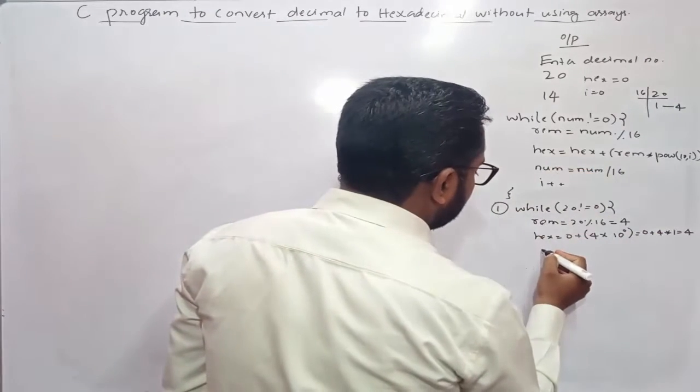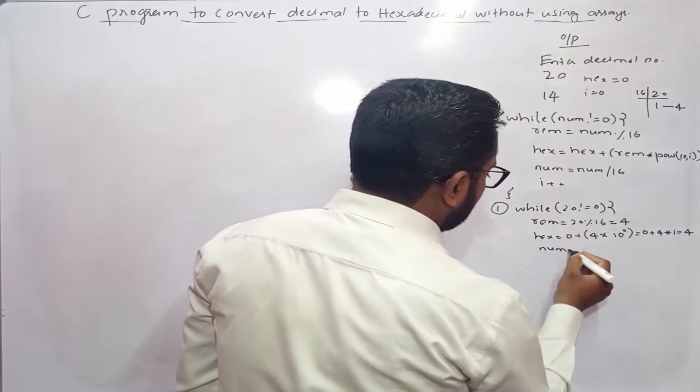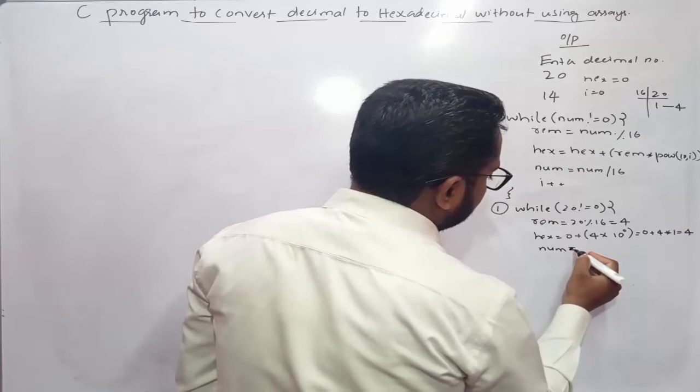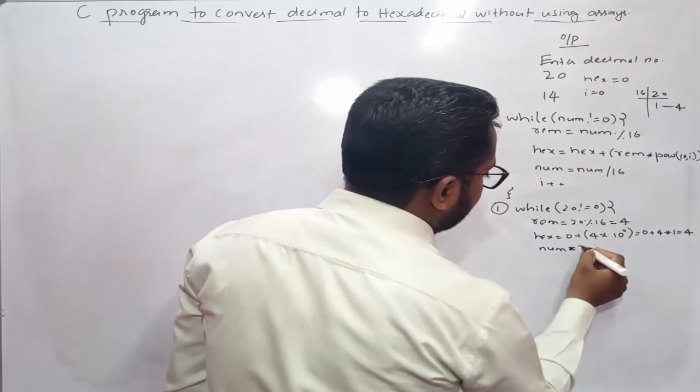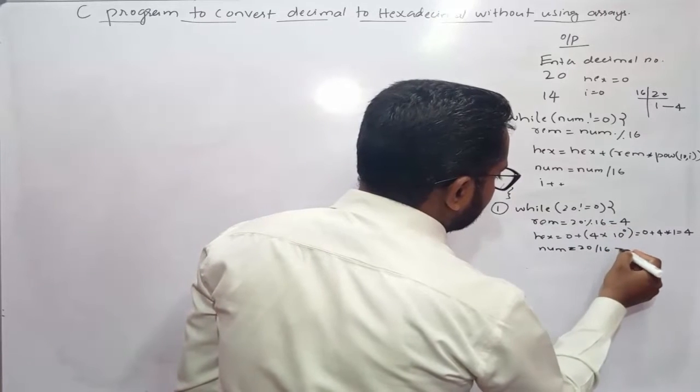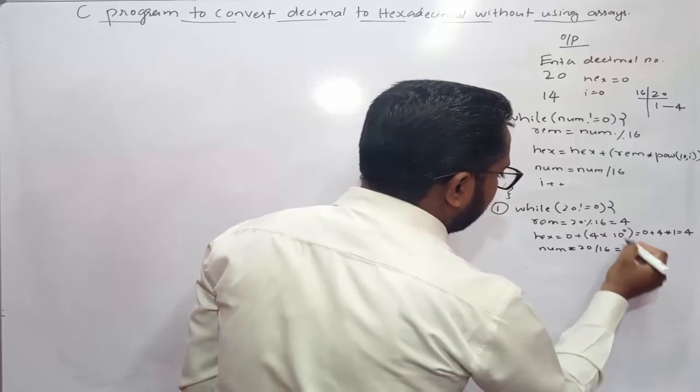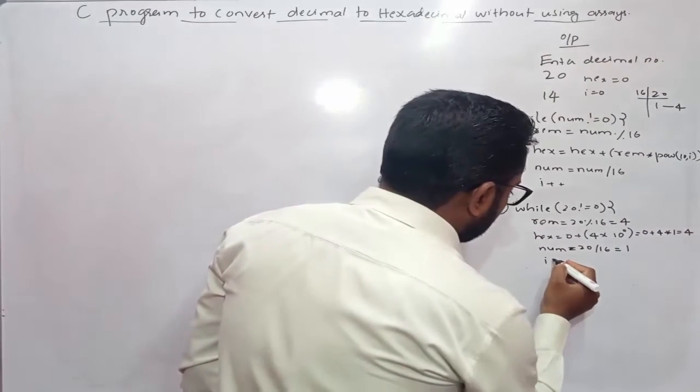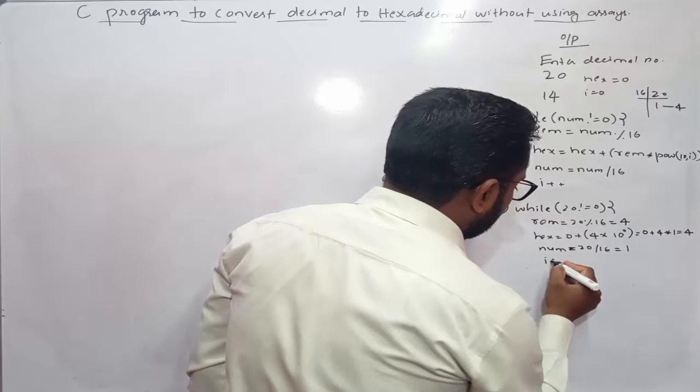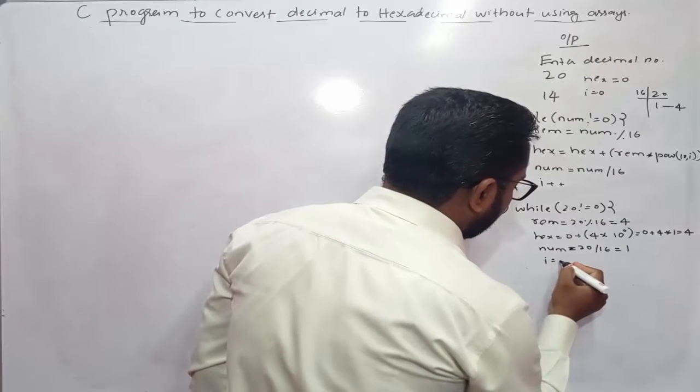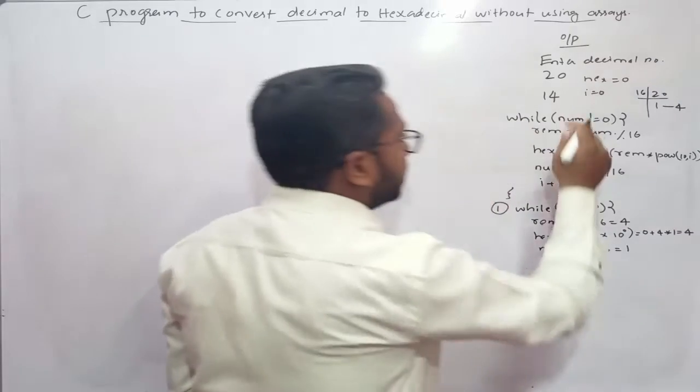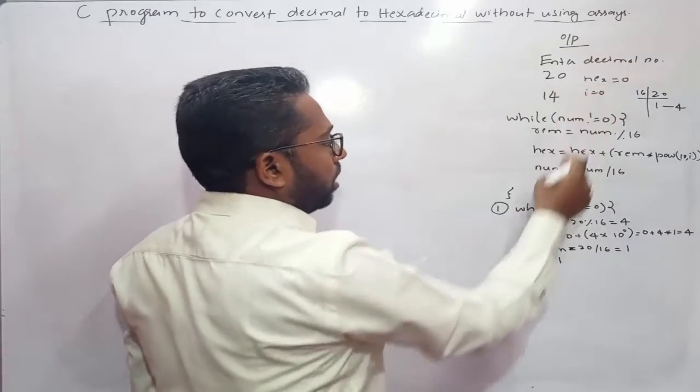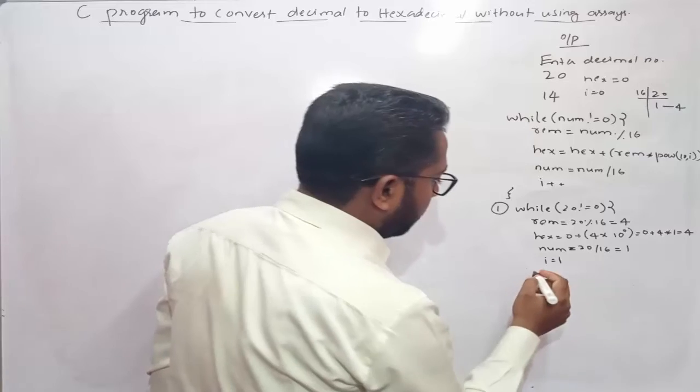Next is num equals num by 16. Num equals num which is 20 by 16, we get 1. Then i plus plus, so now i becomes 1. Initially i value was 0, after incrementing it by 1, now i becomes 1.